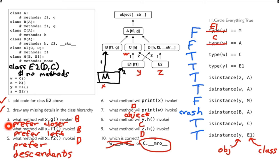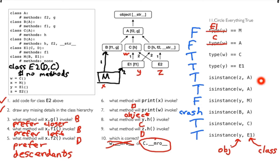So we learned the rules for which methods are going to get called, about method resolution order and how it helps us answer these questions, and some ways to explore both the type of an object and where the type fits into a hierarchy using isinstance. We'll be right back.